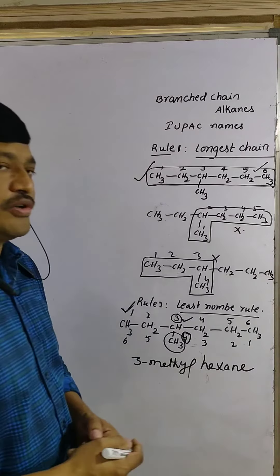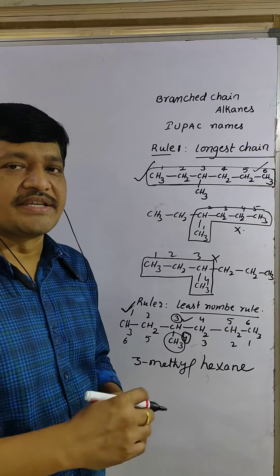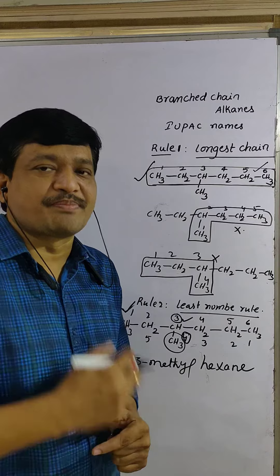You all know that root word, six carbons are there, hex. All are single bonds, ane, suffix, primary suffix.